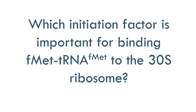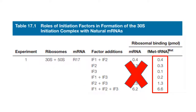Now that the scientists knew that IF3 is the most important factor for mRNA binding, they wanted to know if this was also the case for FMET binding to the ribosome. The FMET data for this phage doesn't really tell you much. There is very little binding for all of the different reactions except when all three initiation factors are added, so it is difficult to point out which initiation factor is most important for FMET binding.